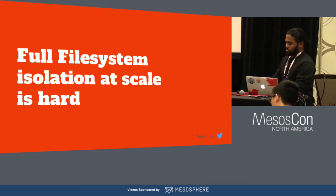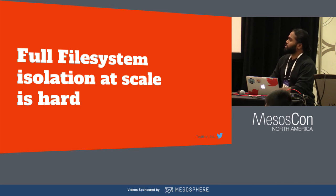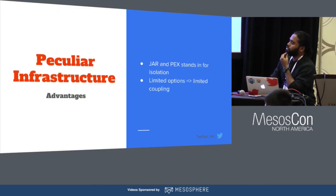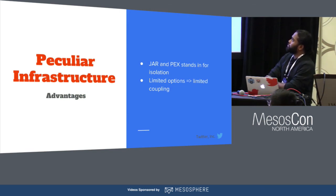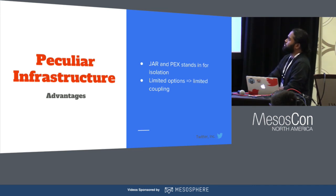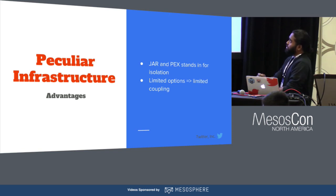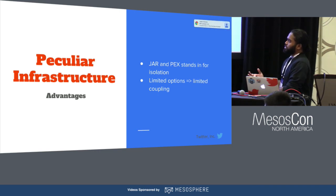The essential takeaway is that full file system isolation at scale is really hard just because of the scale part. Going back to the question of how we actually pulled off the upgrade — it turns out our peculiar infrastructure actually had certain advantages. The jars and pex files used as artifact formats stood in for the isolation since they were self-contained in terms of dependencies. And since we had a very opinionated infrastructure which limited the number of options provided to customers, we thereby limited the coupling that could happen between services and the host. This meant that even if a Python library had native bindings to a particular host OS, if we fixed the problem for one service, we could essentially fix the problem for the rest of the fleet as well.